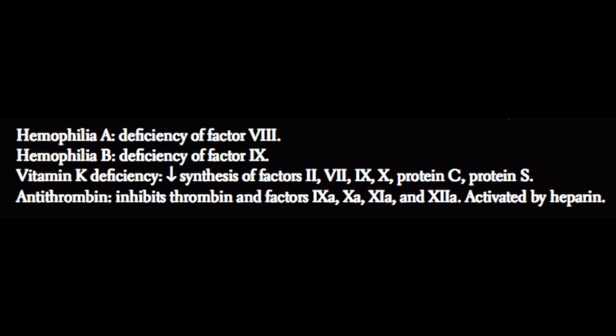Another important point is that factors 2, 7, 9, and 10 are produced by the liver in an inactive form and then activated in a vitamin K-dependent process. Vitamin K is also used in the synthesis of protein C and protein S. The way you might see this on the boards is that deficiencies in vitamin K or pharmacologic inactivation of vitamin K leads to a decrease in the factors 2, 7, 9, and 10. This promotes increased bleeding.